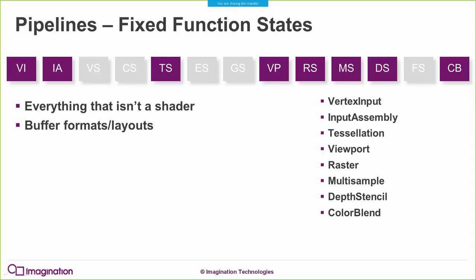So the reason we have pipelines is we take all of that state - everything that could possibly contribute to a pipeline recompile - and bundle it into one immutable object. This means when the application asks the driver to compile the pipeline, the driver has all the information it needs at that moment, and that is when it actually compiles the pipeline. When you call vkCreateGraphicsPipelines, the driver is going to create your graphics pipeline at that point in time. By doing so, you remove a whole load of unpredictability and horrible frame hitching from your application.